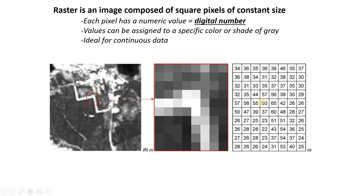These values can be visualized as any color. In this example, we have pixels each with a number, and we can make them light or dark depending on the value of the number, which gives them white or black color. When we render them all together, we see an image.